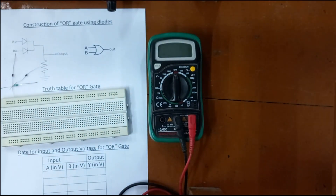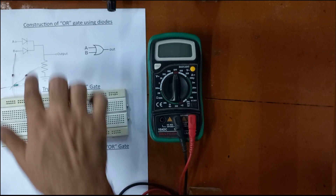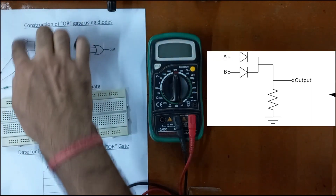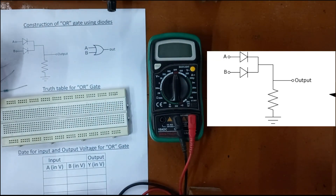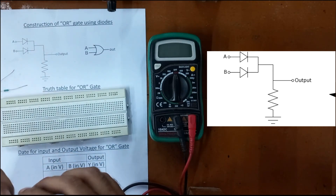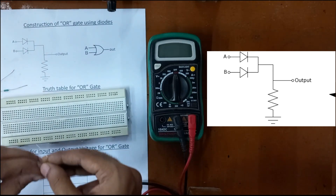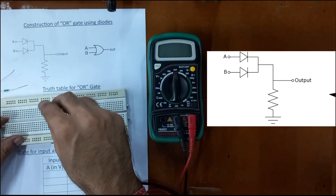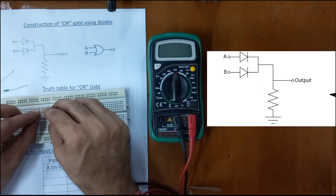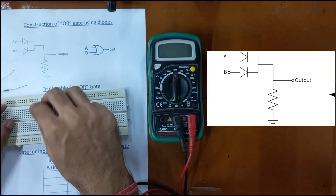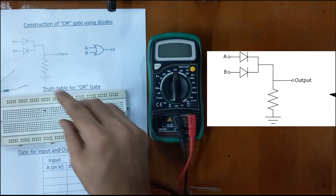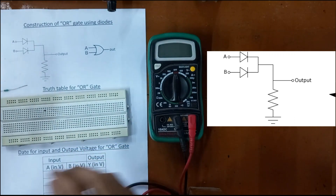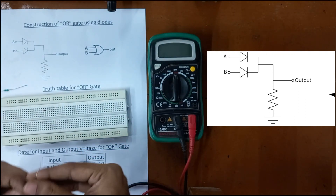First we need to construct this circuit. To construct this circuit, we first need to connect the diodes. We need to keep in mind that the P side should be facing the inputs A and B, and the N sides are connected together.